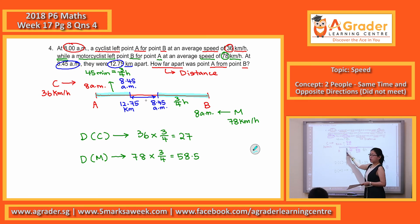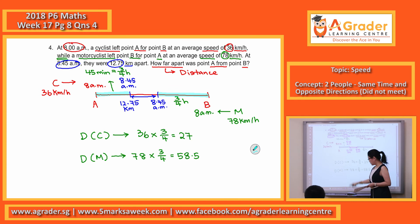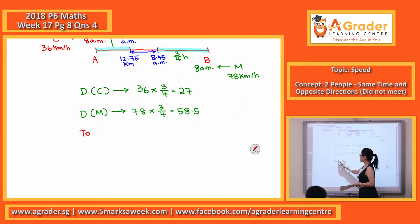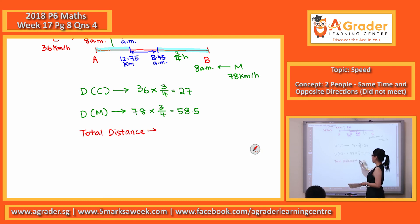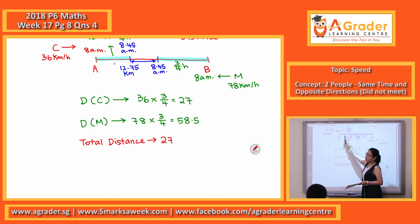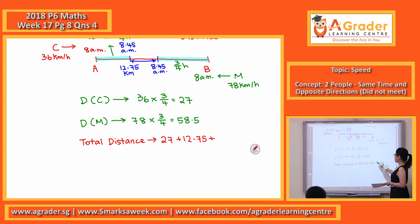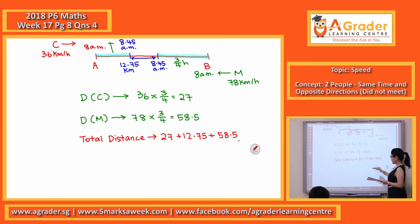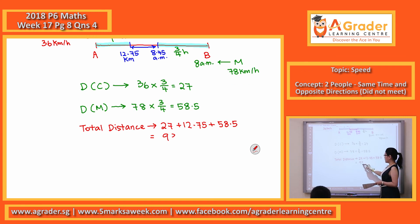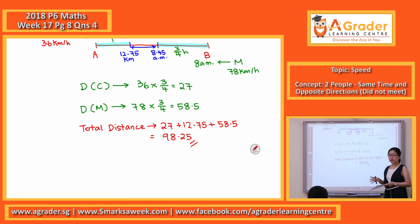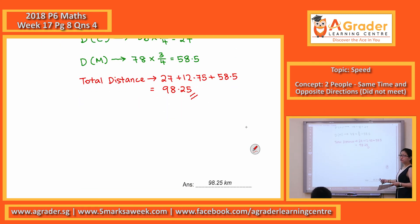So if you want the total distance, you just add up these three parts. The 12.75km in between is given. For total distance: 27 — the first part — plus 12.75, plus 58.5. You get 98.25. Please remember it's all based on km, so your final answer is 98.25km.